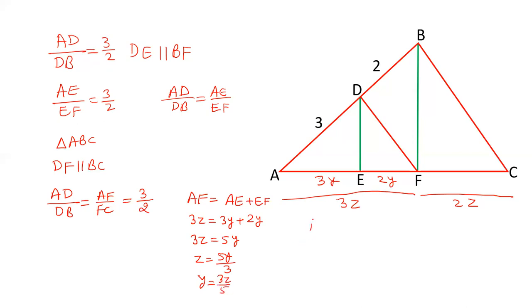Now, we have to find out the ratio of AE and EC. AE is 3y. And EC is 2y plus 2z. So, let's keep y as it is and let's put the value of z. So, this is 3y. This is 2y. And the value of z is 5y by 3. So, this will be 5y upon 3.